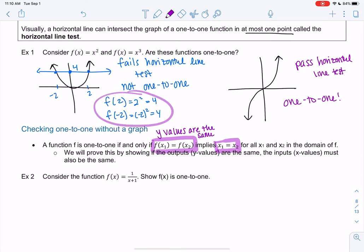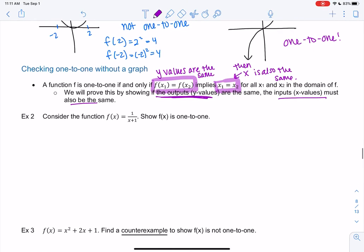In the one that was not one-to-one, we had different x values. But if it is one-to-one, if the y's are the same, then the x's are the same. It's a very formal math definition. It's going to get us to do maybe our first math proof of the semester. So we'll prove this by showing that if the outputs are the same, so we're going to start by assuming the y values are the same, and we're going to prove that the x values are also the same.